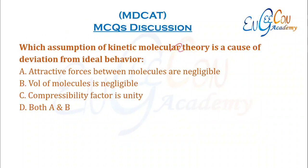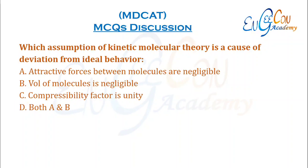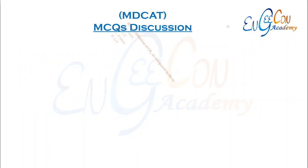Which assumption of KMT is a cause of deviation from ideal behavior? The two postulates that attractive forces are negligible and volume is negligible are the causes of deviation from ideal behavior. So both A and B are correct.